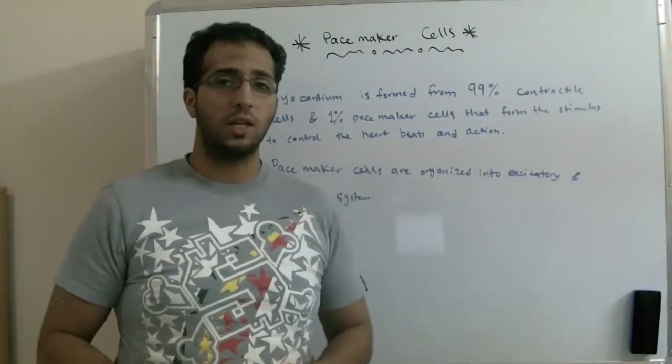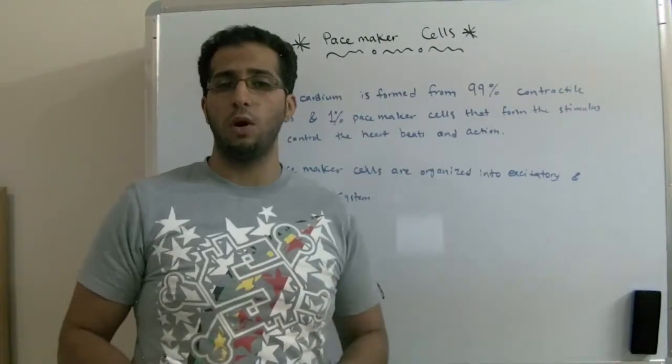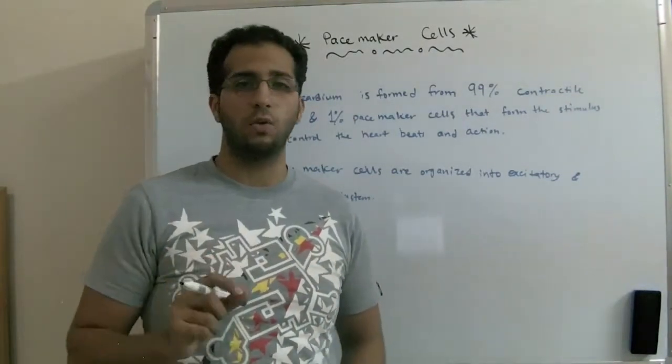The pacemaker cells are also anatomically distinct. They are smaller in size and they contain few contractile fibers.